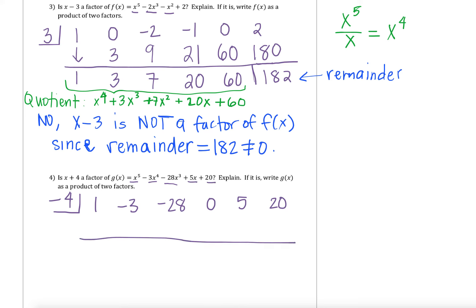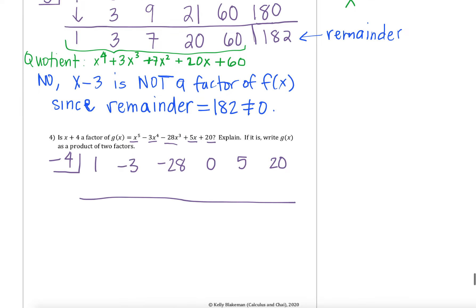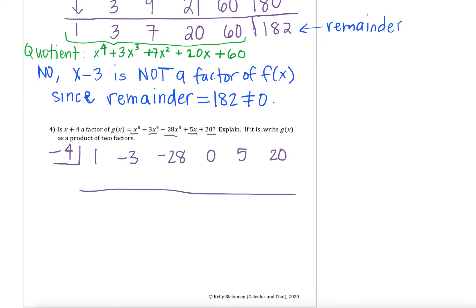Now from here we can do the synthetic division. Why don't you guys pause the video and finish off the synthetic division on your own. So our first step: bring down that 1. 1 times negative 4 is giving us a negative 4. If we add down, we end up with a negative 7. Negative 7 times negative 4 is giving us a positive 28, so when we add down I end up with 0. 0 times negative 4 gives 0; 0 plus 0 gives 0. 0 times negative 4 again gives 0; but now 5 plus 0 gives me 5. 5 times negative 4 gives negative 20. When we add those down, we end up with one last 0.